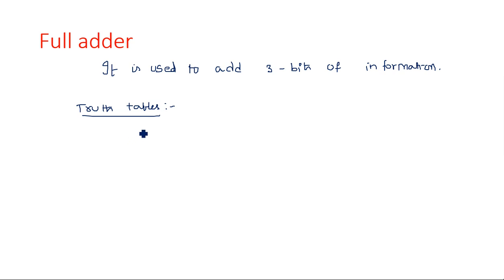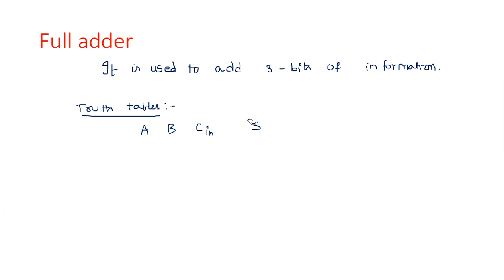For the truth table, there are three inputs: A, B, and C — where C is the carry input. The outputs are carry output (Cout) and sum (S). We will explain what carry input means shortly.